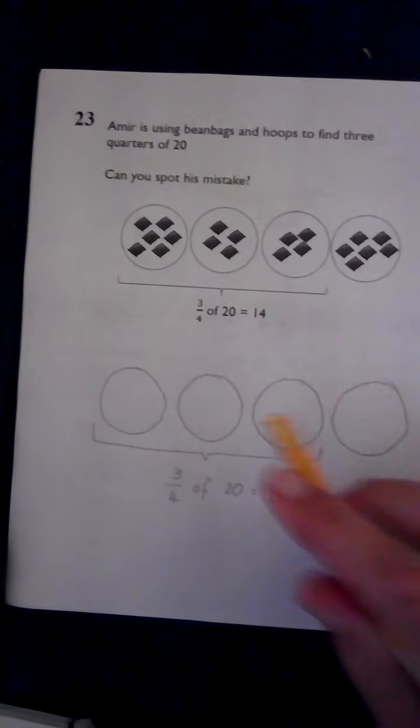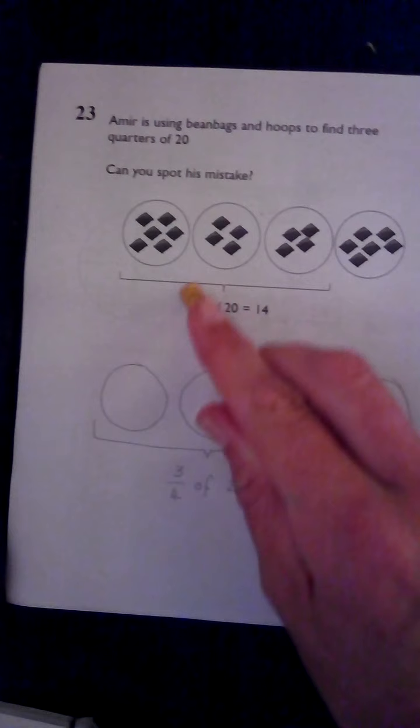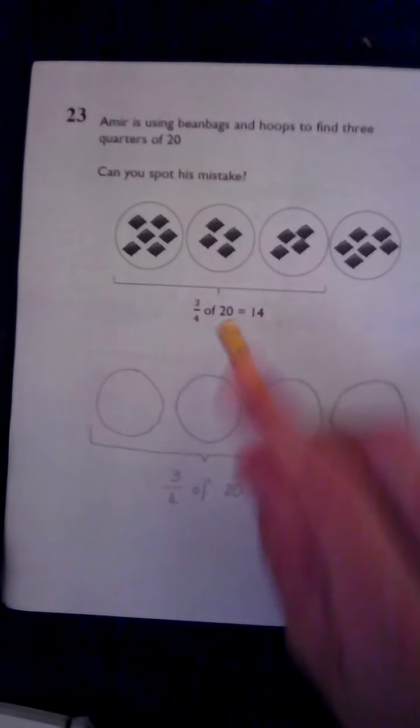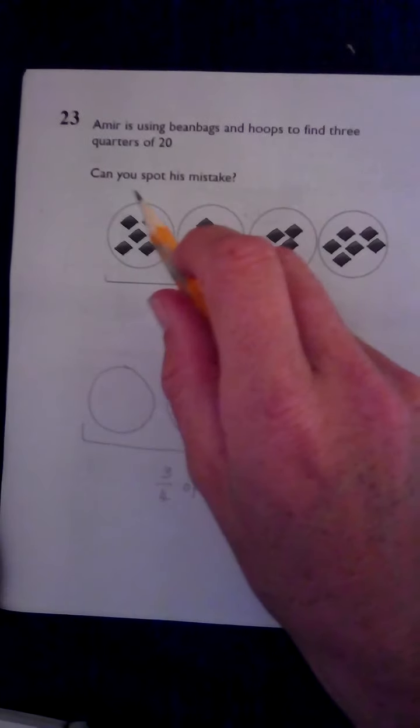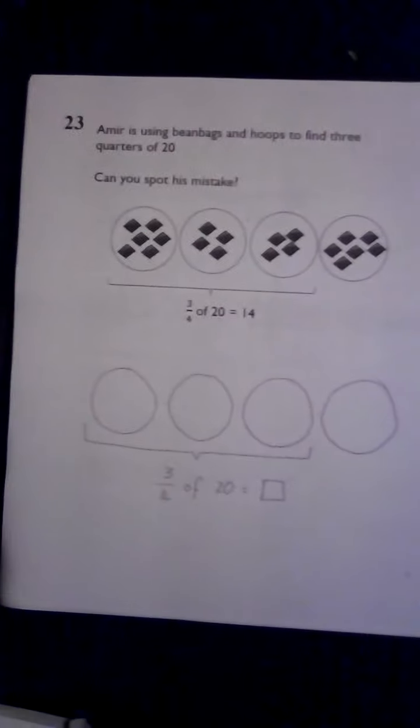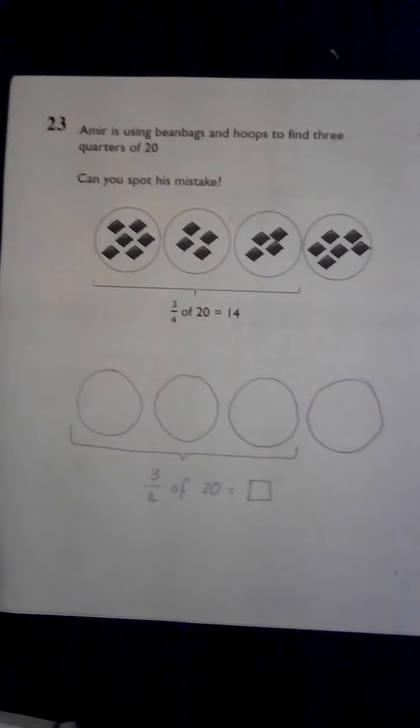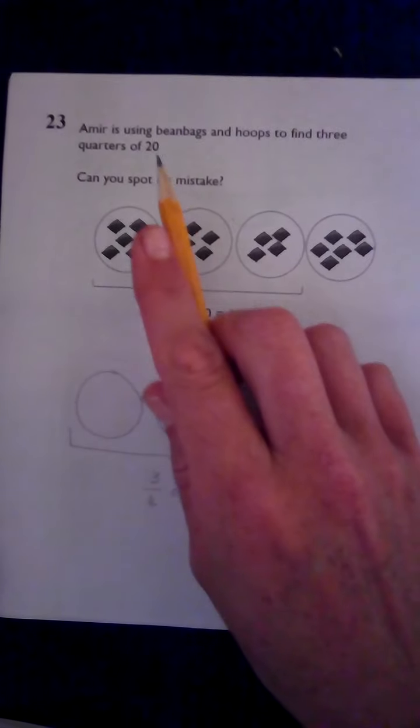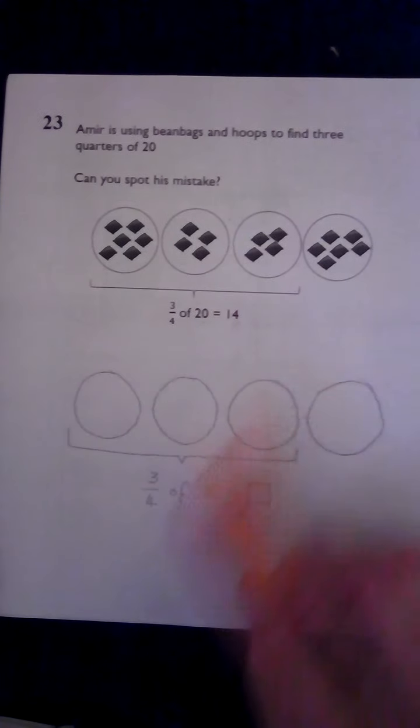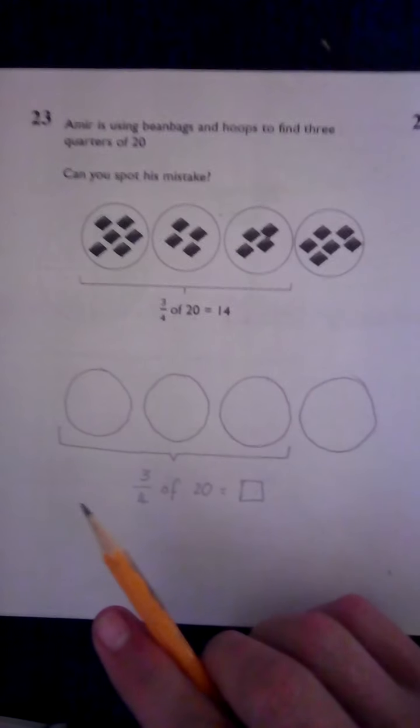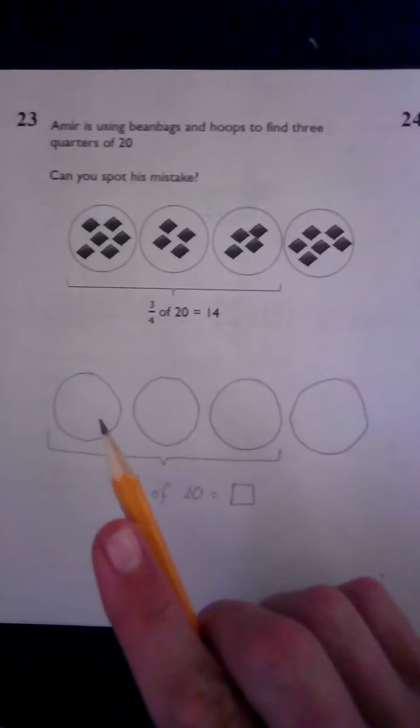So what does three quarters look like? Looks like that. Three quarters of 20. Can you spot his mistake? Well, I can see right off that he has a mistake because if you count how many bean bags he has, he does have 20, but he definitely hasn't shared them equally.